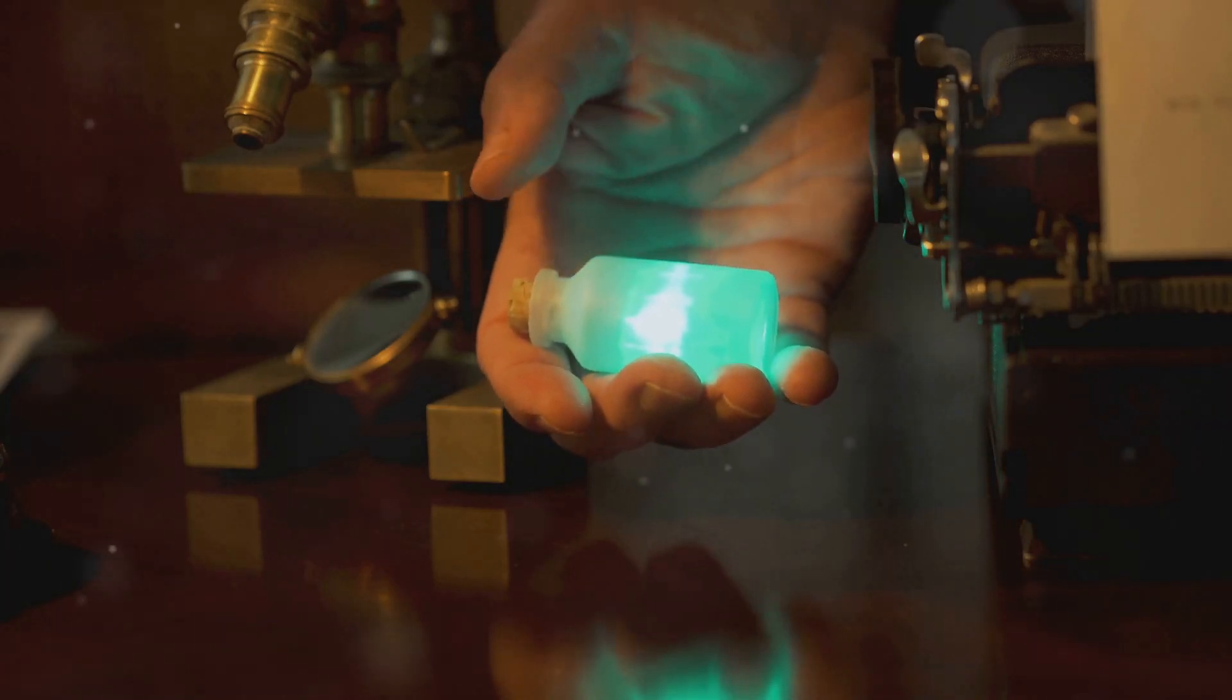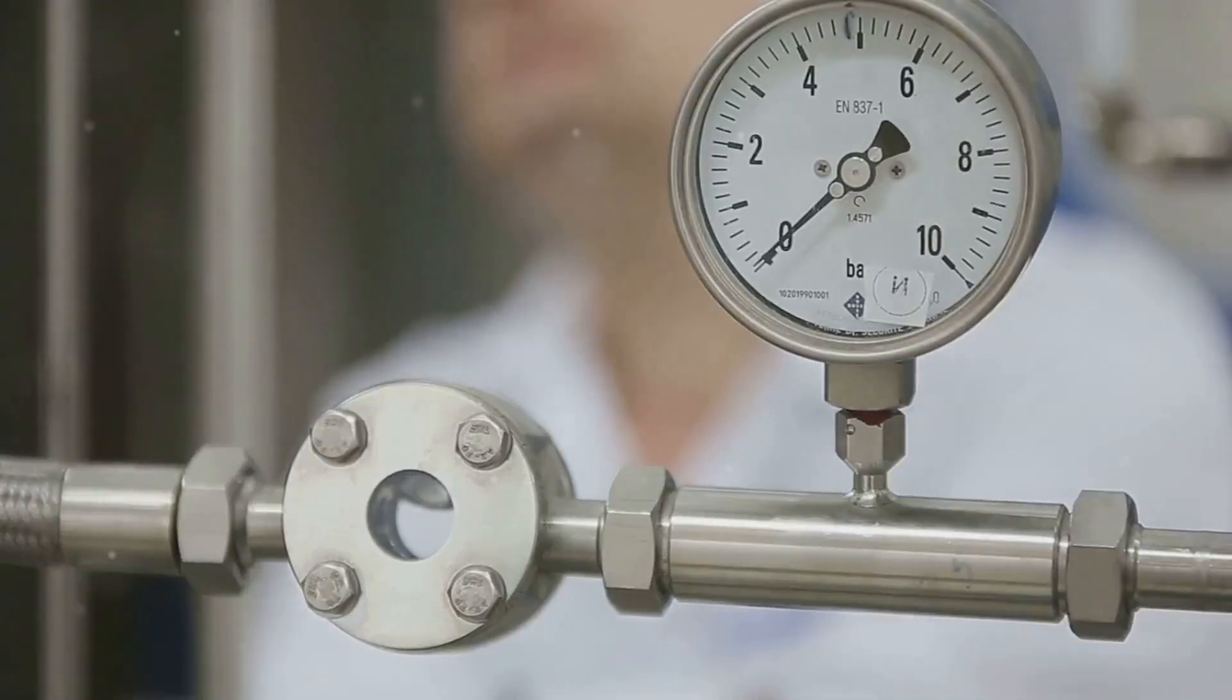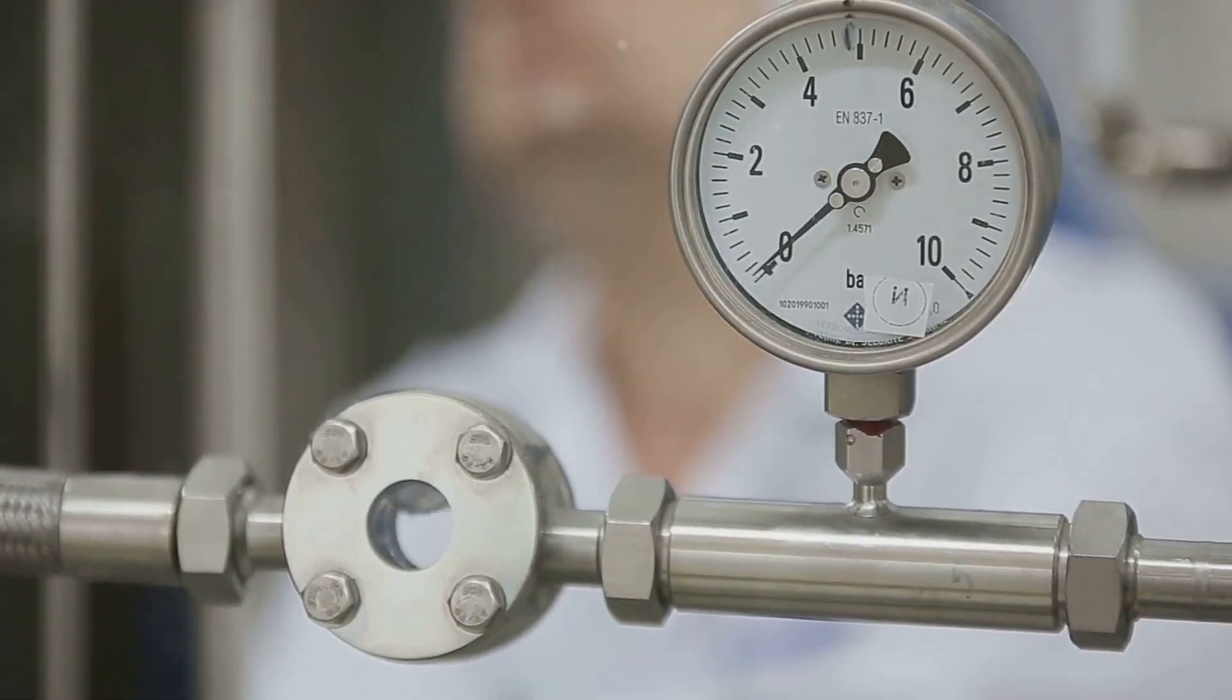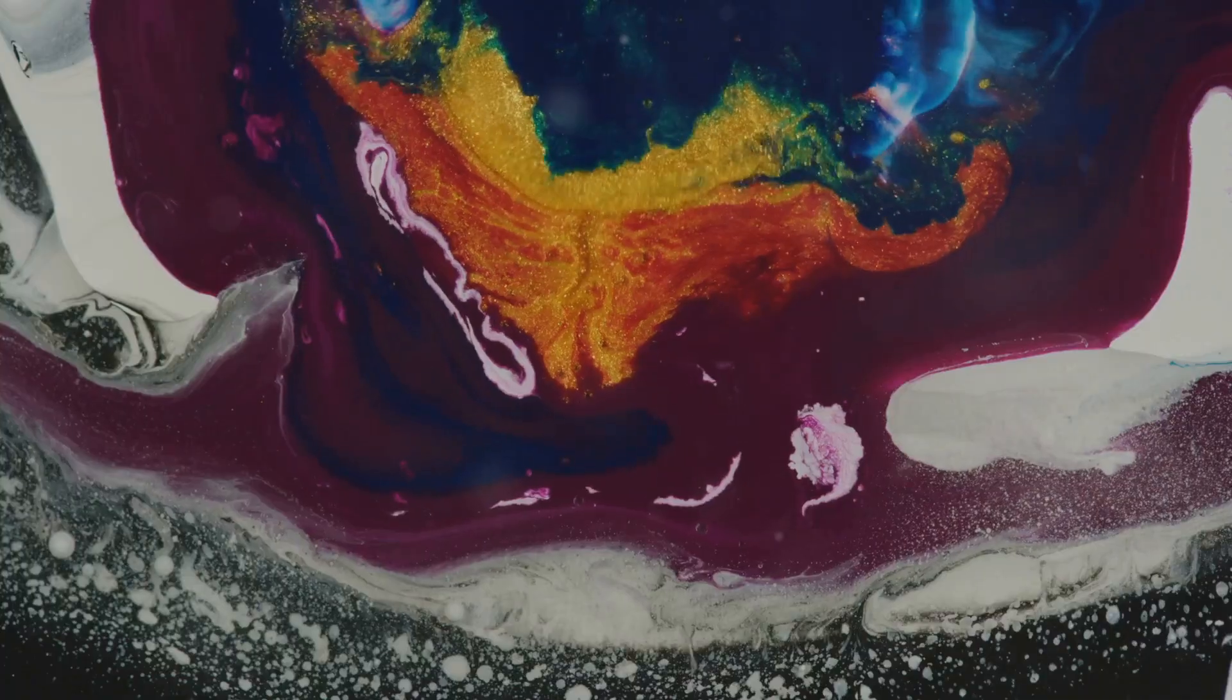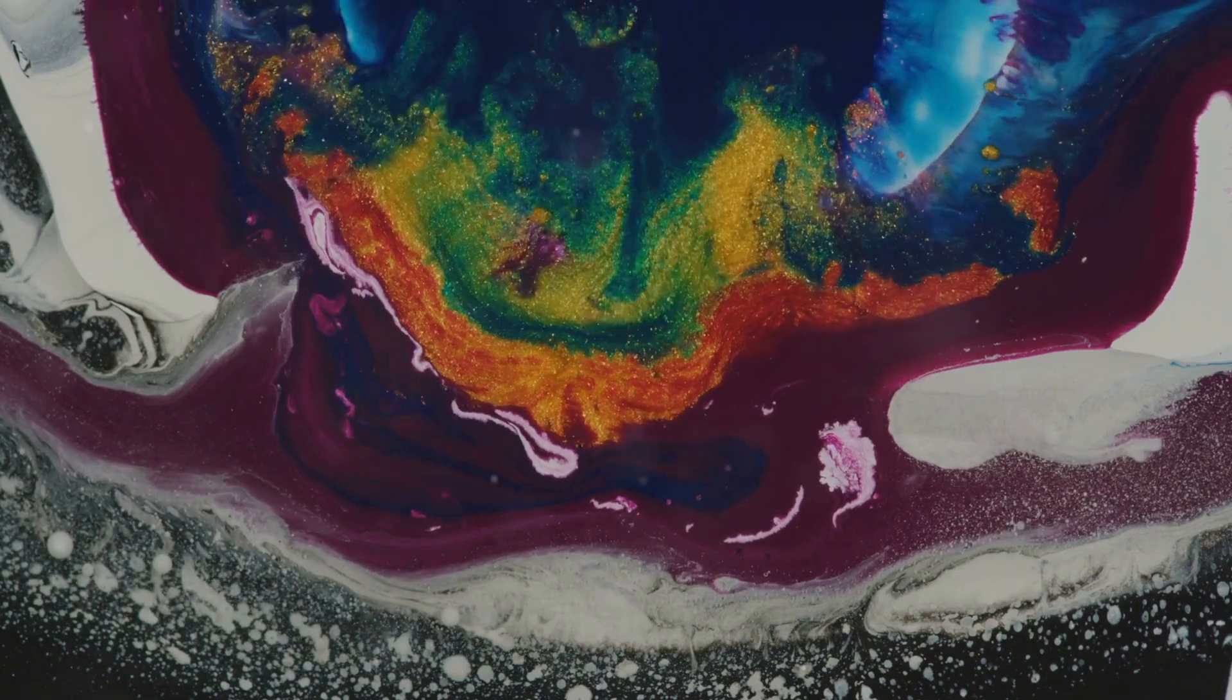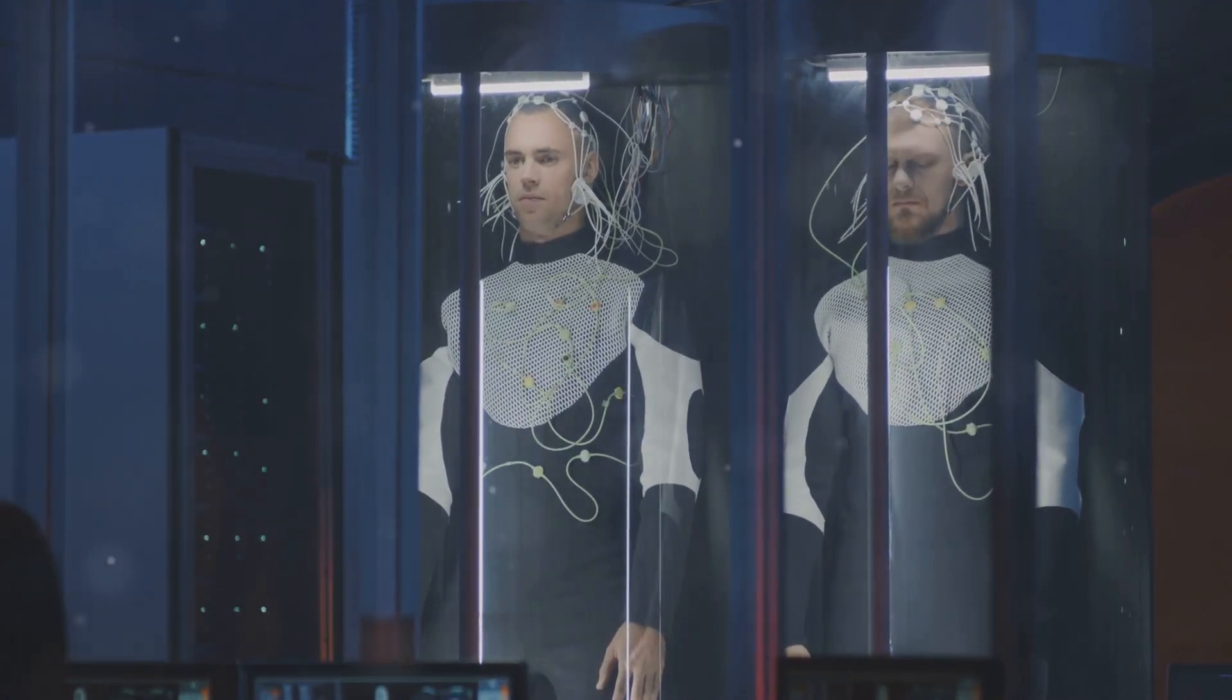The metafluid transforms in response to external stimuli. It shifts from opaque to transparent with a change in pressure. This effect comes from the interaction between light and the fluid's structure. Spherical particles scatter light, making it opaque. Apply pressure and the fluid becomes transparent. This opens possibilities for dynamic camouflage and adaptive optics.